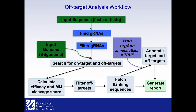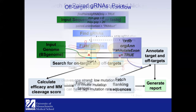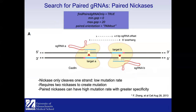The overall workflow for off-target analysis has many parameters, but if you are working with SpCas9 everything is set by default. You can simply input your sequence as a FASTA or FASTQ file and input a genome if you are interested in off-target analysis. You also supply a TxDb or OrgDb to annotate the off-target sites to see whether they fall in exons or introns.